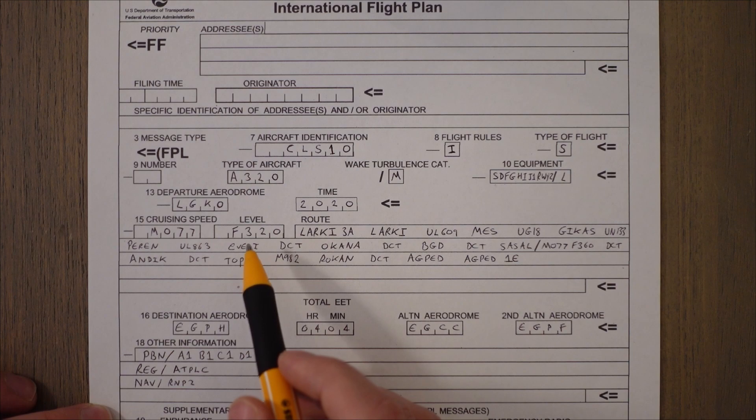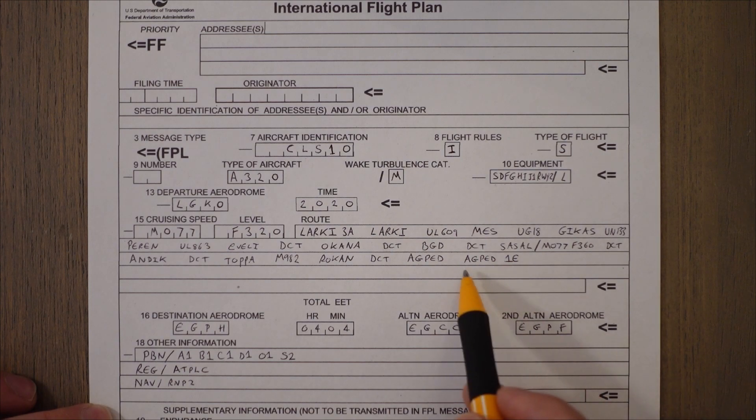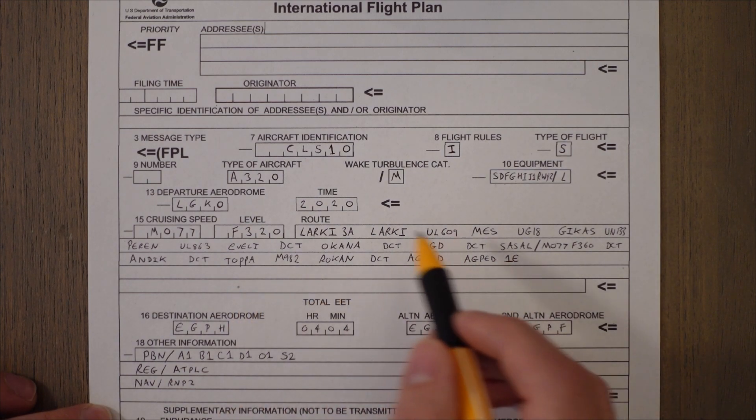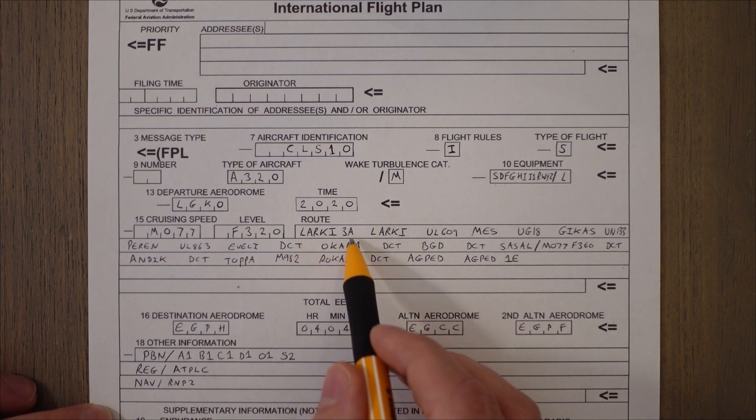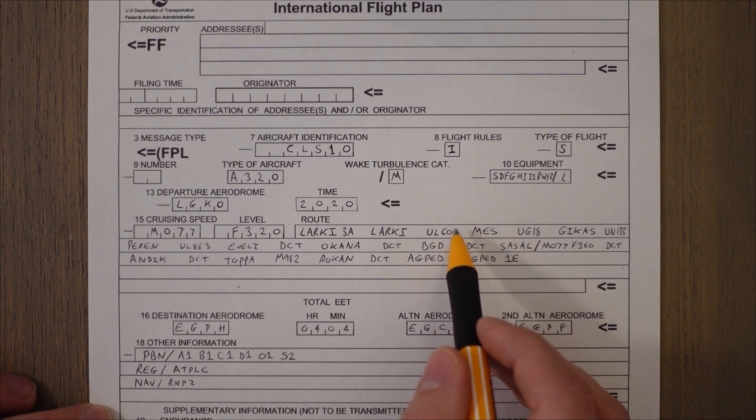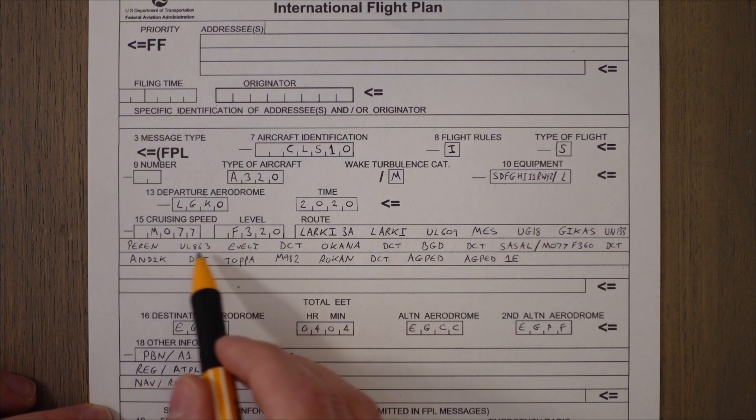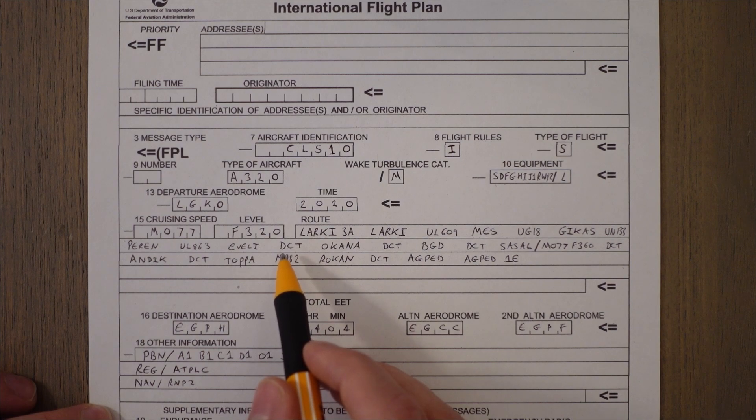Then we have our route including our standard instrument departure and at the end our standard terminal arrival. A few things to know about this. This is just various waypoints so you've got the LARKY3A to LARKY, then between each waypoint there should either be airway, this one Uniform Lima 609, or you can see DCT which means direct. So you're not flying along an airway, you're just cutting the corner maybe flying directly from EVELI to OKANA.